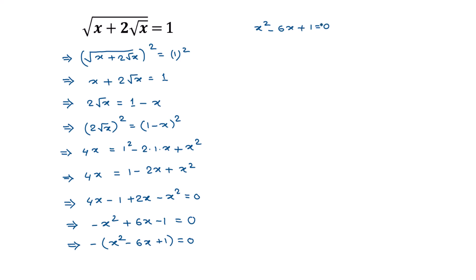This is a quadratic equation. The general quadratic equation is ax squared plus bx plus c is equal to 0, and the solution is x equals negative b plus or minus square root of b squared minus 4ac, all over 2a.